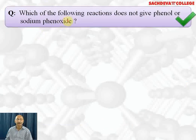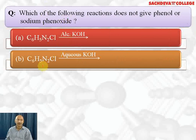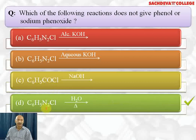Next question: which of the following reactions does NOT give phenol or sodium phenoxide? Options are: benzene diazonium chloride reacts with alcoholic KOH; benzene diazonium chloride reacts with aqueous KOH; benzoyl chloride reacts with NaOH; and benzene diazonium chloride is heated with water. The correct answer is C.